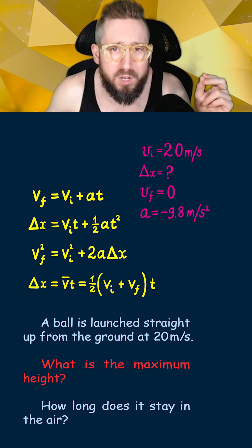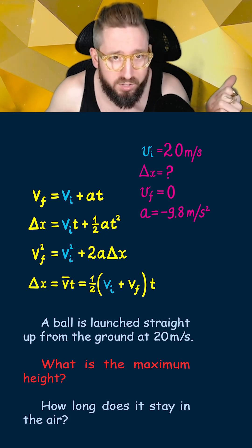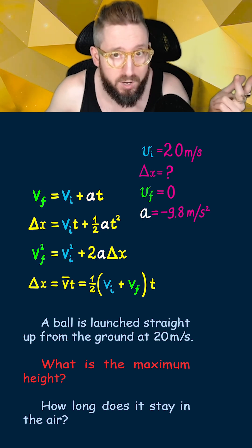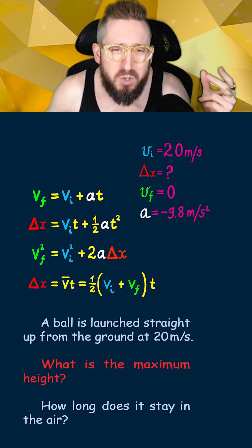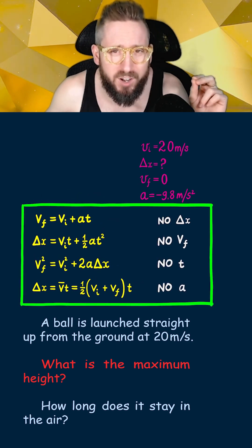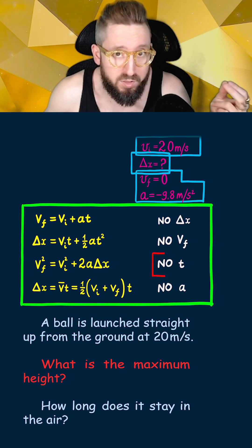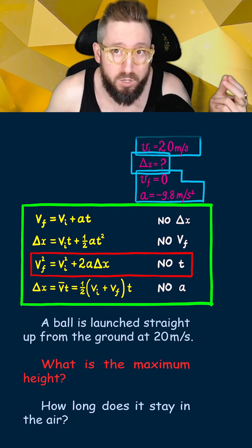So going through our formulas, we want to use the kinematics equation that has initial velocity, final velocity, acceleration, and the change in position. You can notice that each formula has a different variable missing, so if we're not given and we're not solving for that missing variable, then that's the equation we want to use.